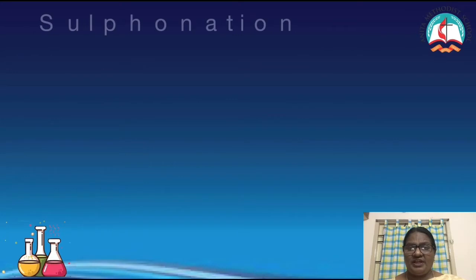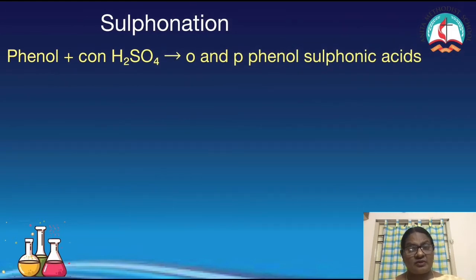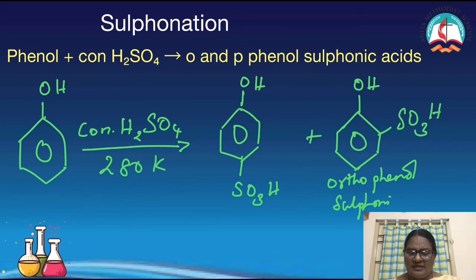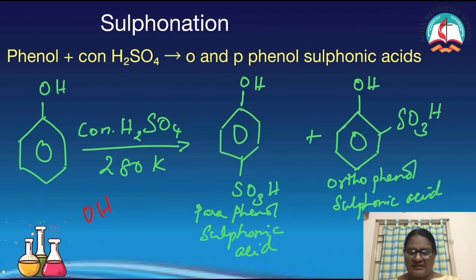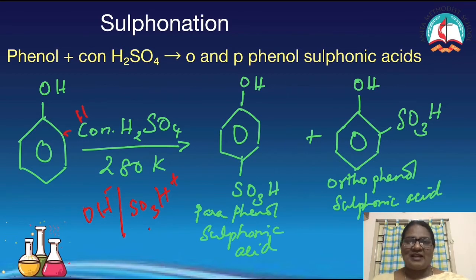Next, we are going to see sulfonation, where the sulphonic acid group is introduced. Phenol is treated with concentrated sulfuric acid, and a mixture of both ortho and para-phenol sulfonic acid is formed. Sulfuric acid ionizes to give SO3, H+, and OH-. SO3 is the electrophile which is introduced in the ortho and para positions. The H and OH are removed as water, and SO3H — called the sulfonic acid group — is introduced. When substituents are opposite each other, it is the para isomer; when adjacent, it is the ortho isomer.